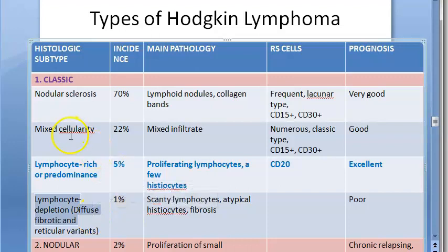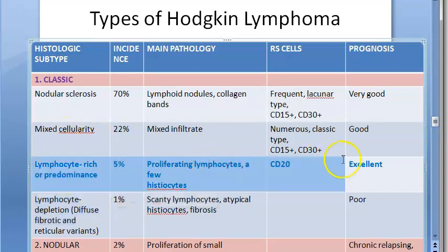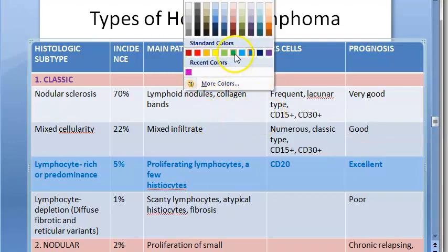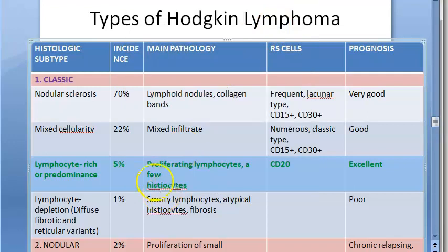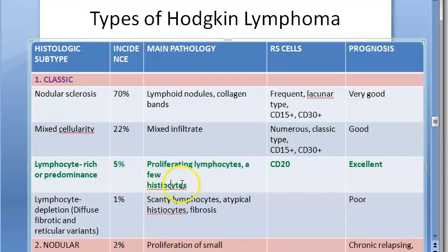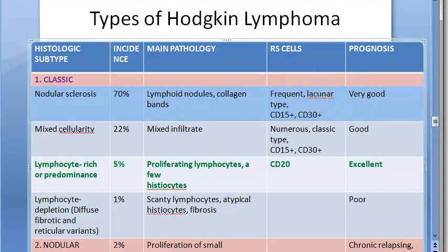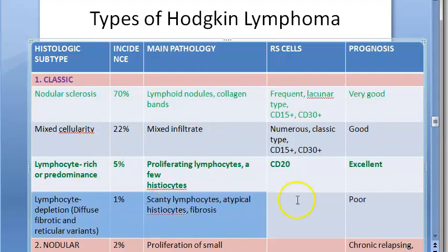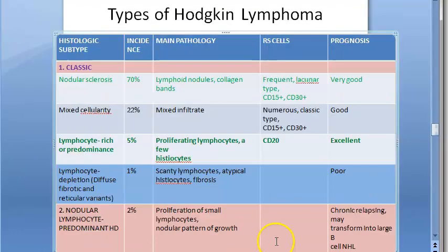Regarding prognosis: lymphocyte rich has the best prognosis — if there are more lymphocytes, prognosis is good. Nodular sclerosis has the next best prognosis. The worst prognosis is lymphocyte depleted — when lymphocytes are fewer, prognosis is poor.